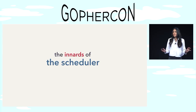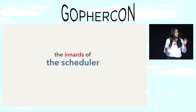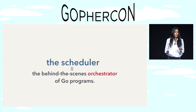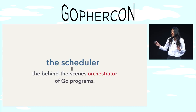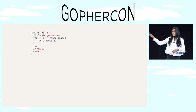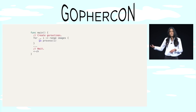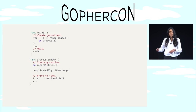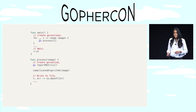Now, first things first, what is the Go scheduler? The scheduler is, simply put, the behind-the-scenes orchestrator of your Go programs. Say we have a simple program that looks like this — an image processing program, and this will be our example for the rest of the talk. We have the main Go routine. It creates some processing Go routines, and then it waits on a channel. Each processing Go routine creates another Go routine, does the complicated algorithm, the processing, and then it writes to the file system.